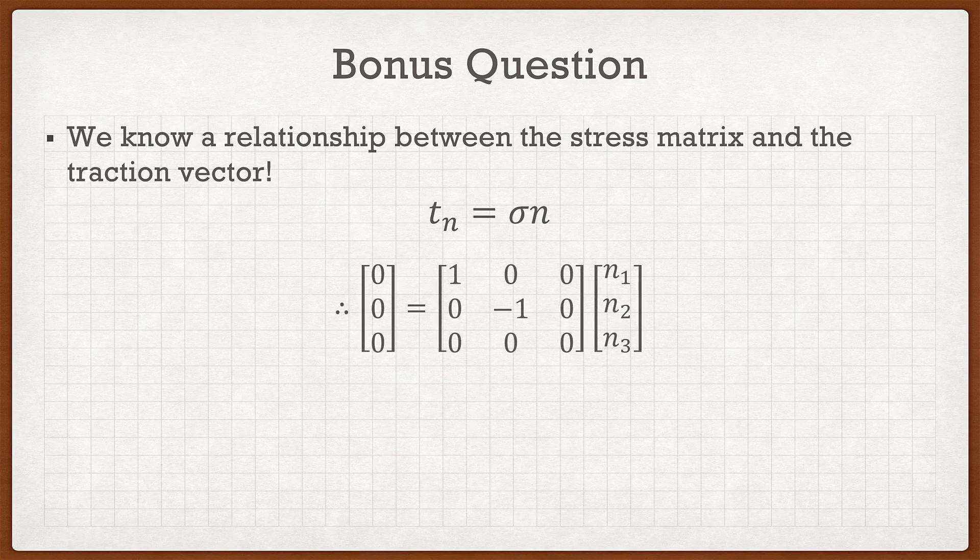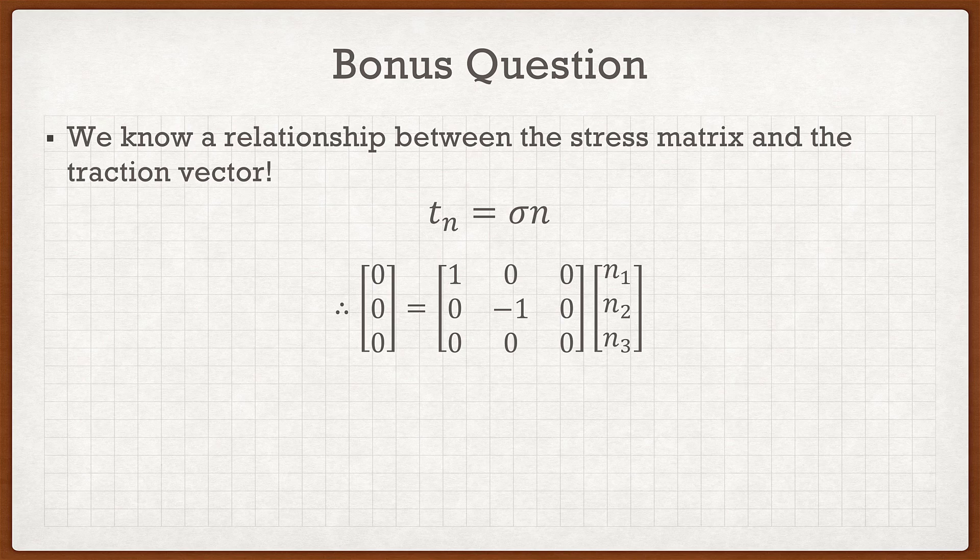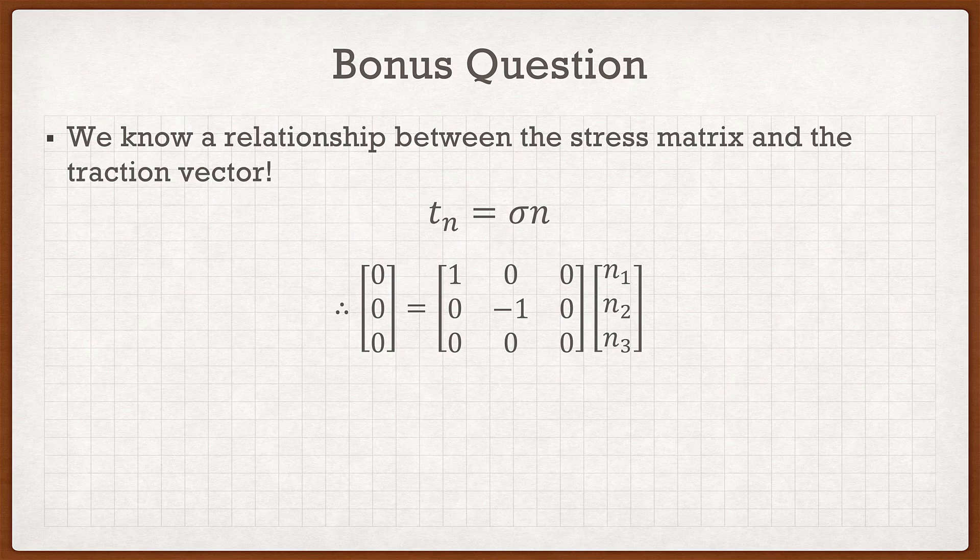So if we substitute all our values in, we have [0, 0, 0] for the traction vector equals our sigma tensor [1, 0, 0; 0, -1, 0; 0, 0, 0] times the normal vector [n₁, n₂, n₃]. Again, we want to prove that this normal vector is basically a line in the e₃ direction.